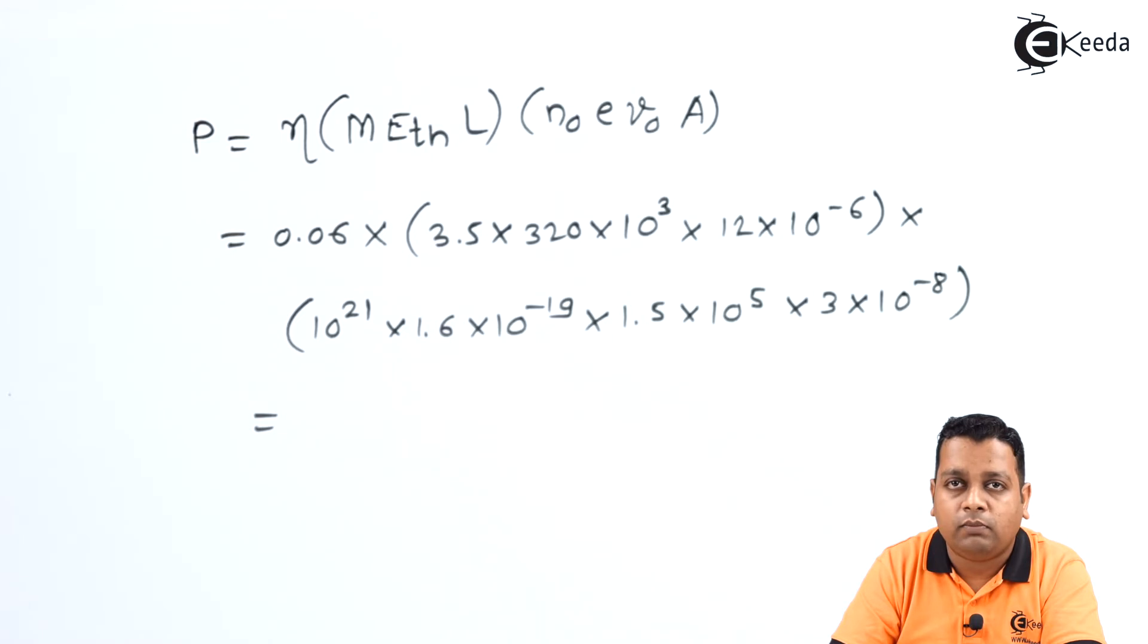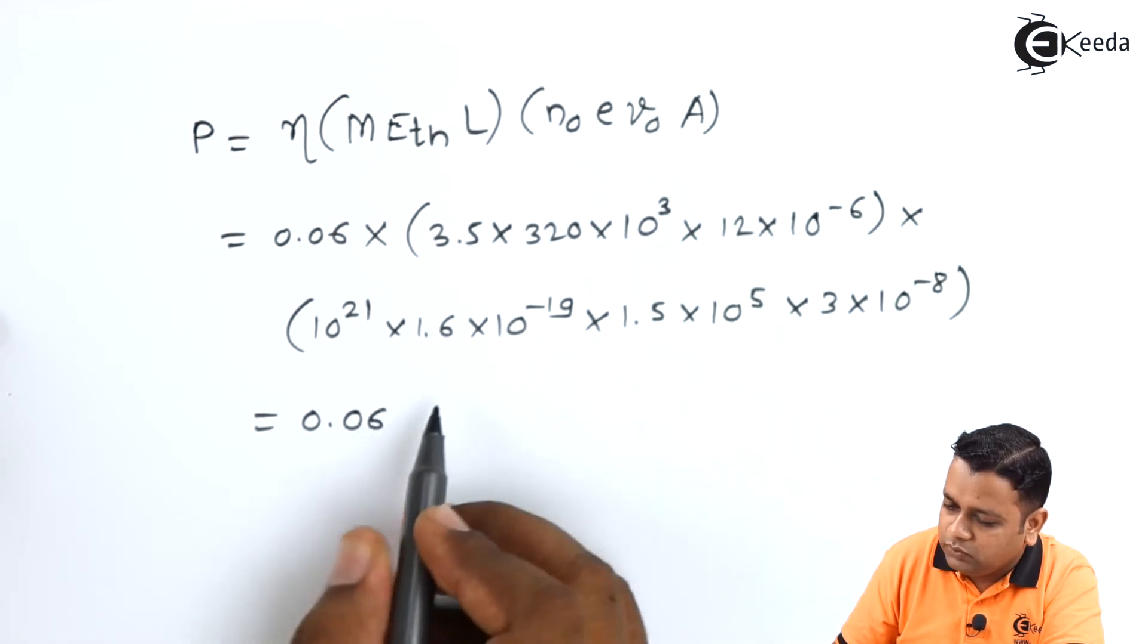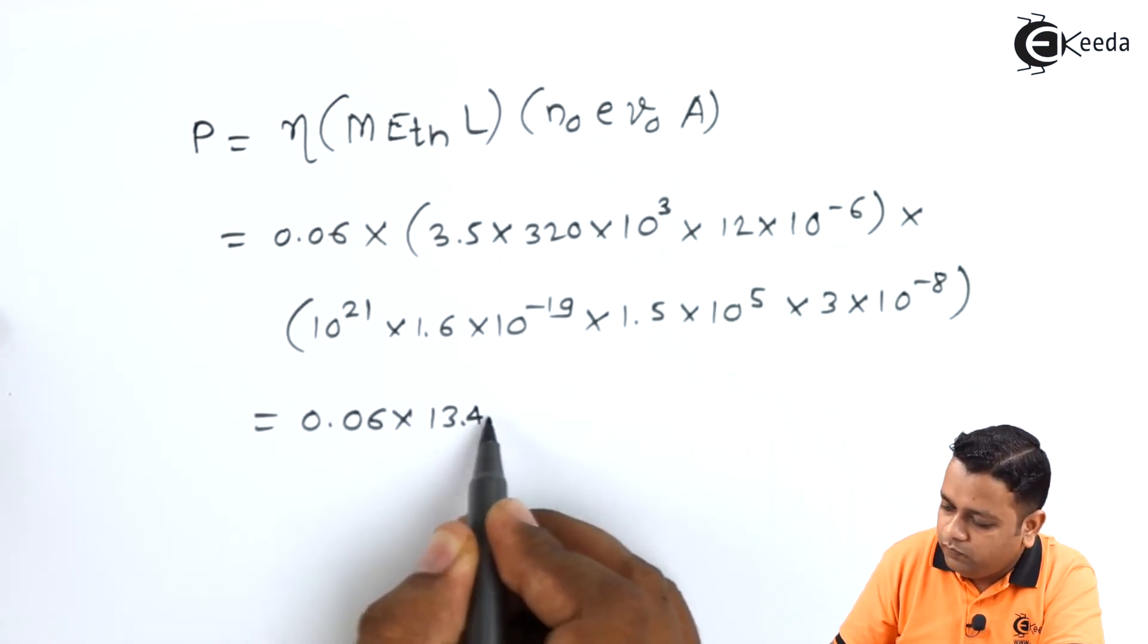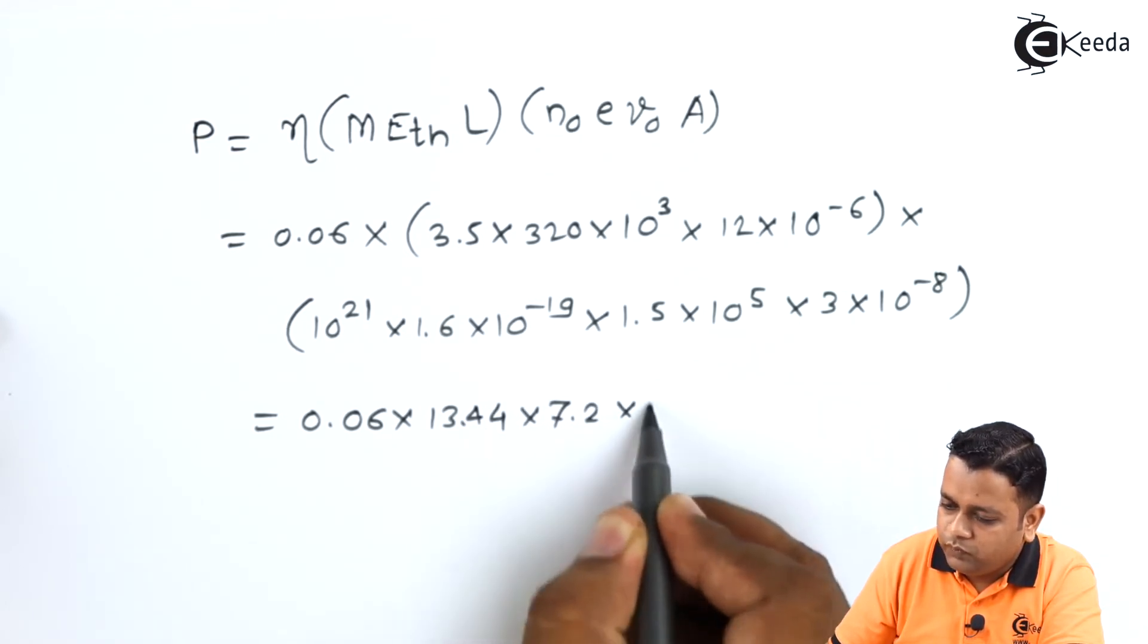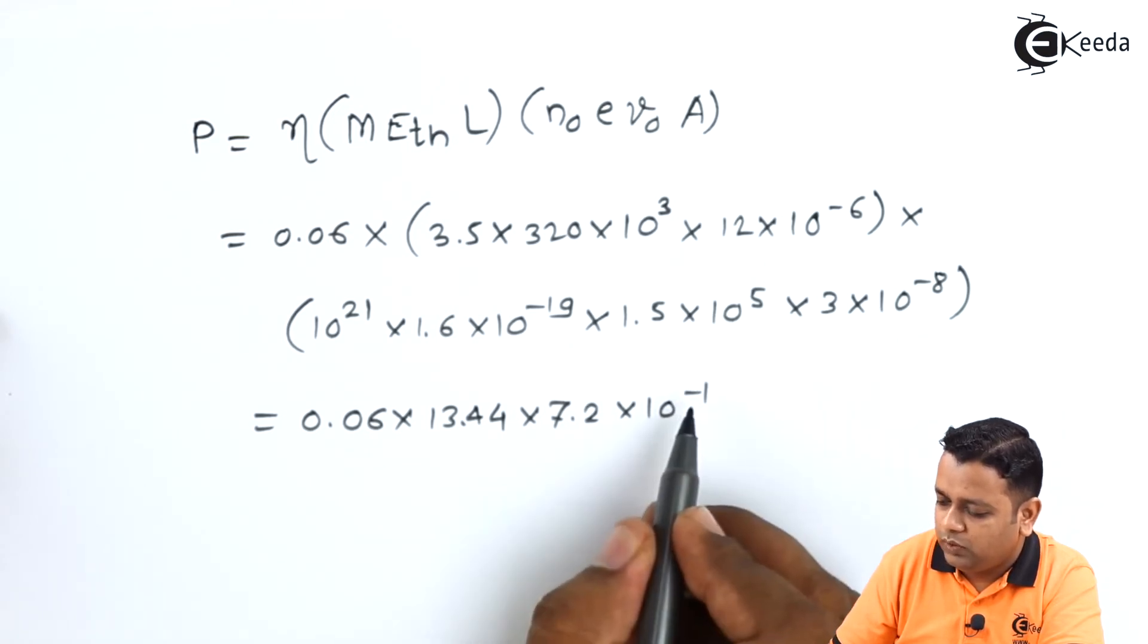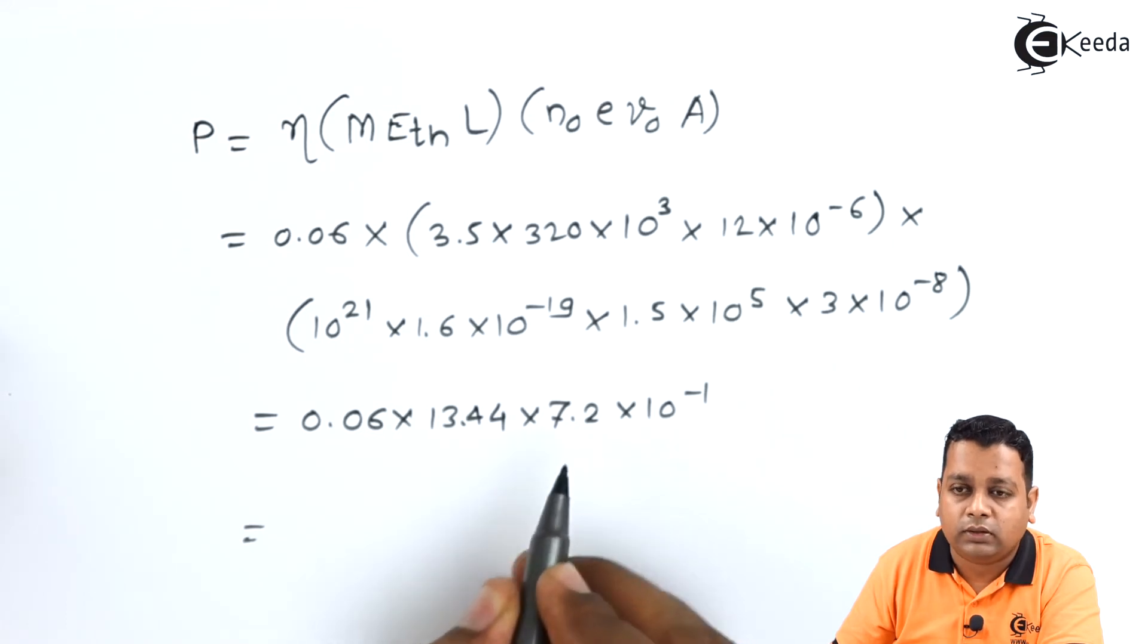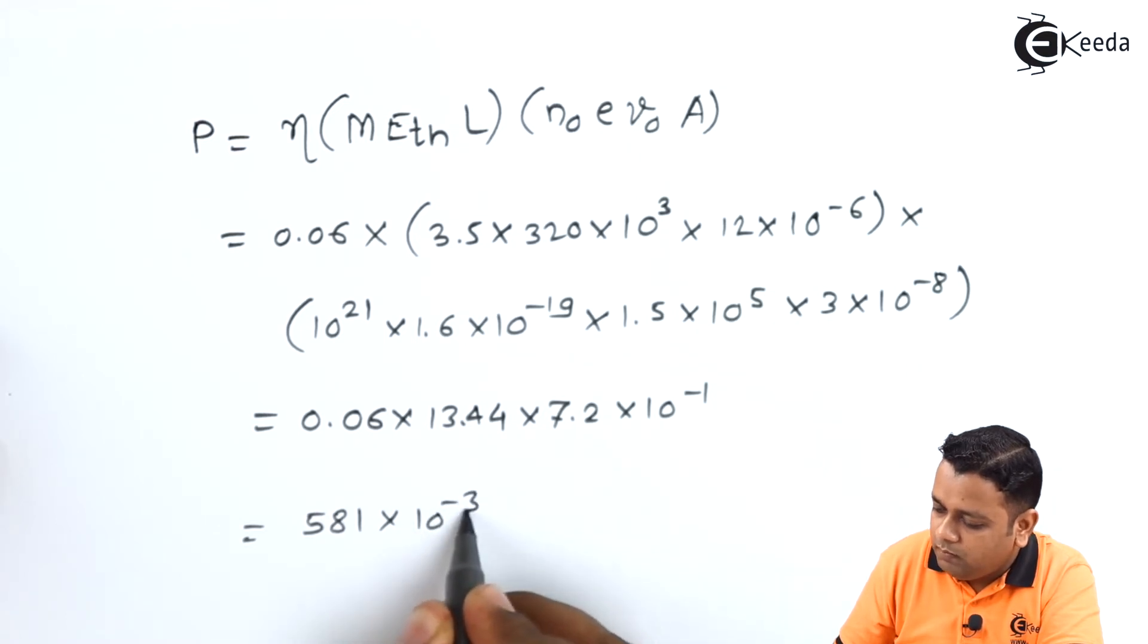Now let us make a simple multiplication among them and we obtain the next step as 0.06 into 13.44 into 7.2 into 10 raised to power minus 1.